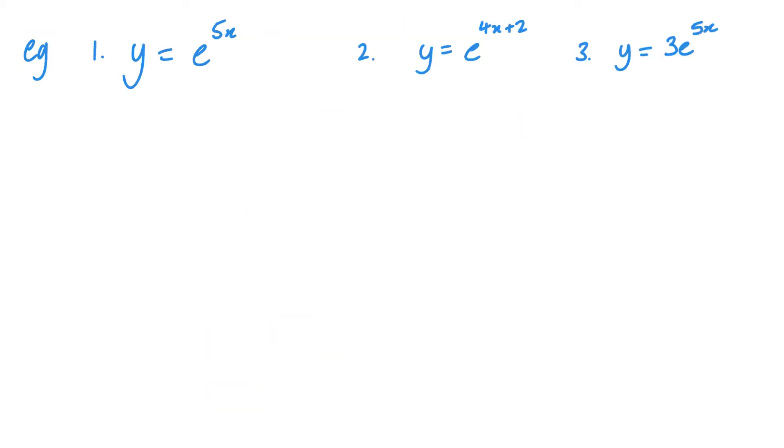So let's look at differentiating these. So the first one, dy by dx equals, so e to the 5x, that stays the same. So it becomes 5e to the 5x. Looking at the second one, e to the 4x plus 2, stays the same. Differentiate this, gives me 4, so it's 4e to the 4x plus 2.